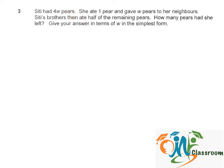Siti had four W pears. She ate one pear and gave W pears to her neighbors. Siti's brothers then ate half of the remaining pears. How many pears had she left? Give your answer in terms of W in the simplest form.